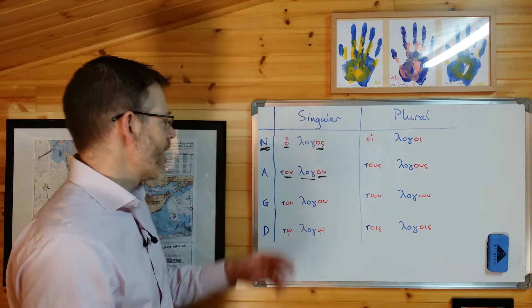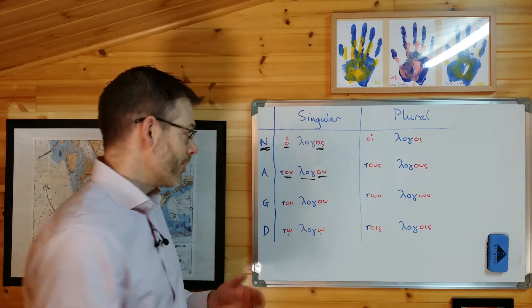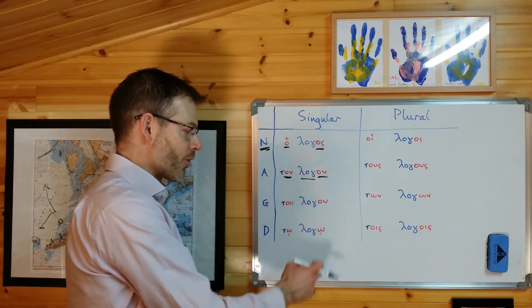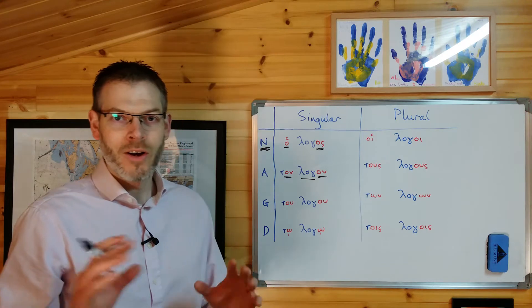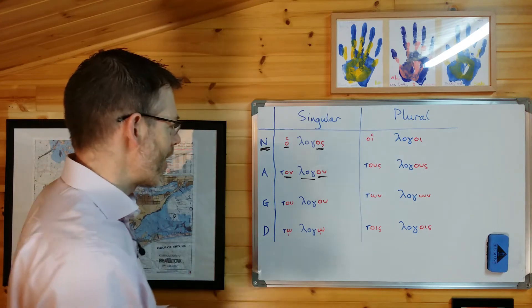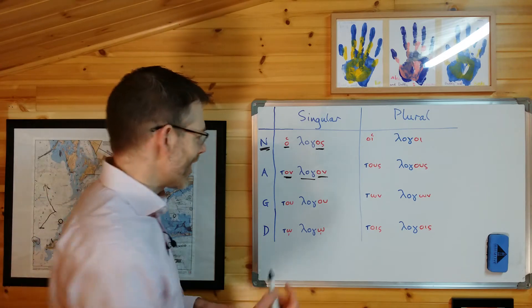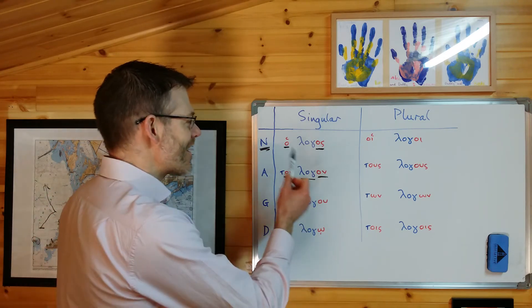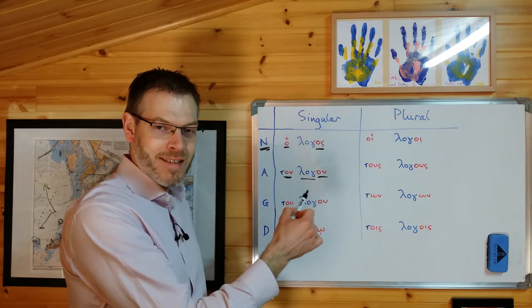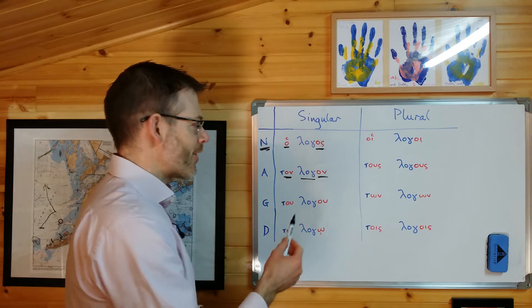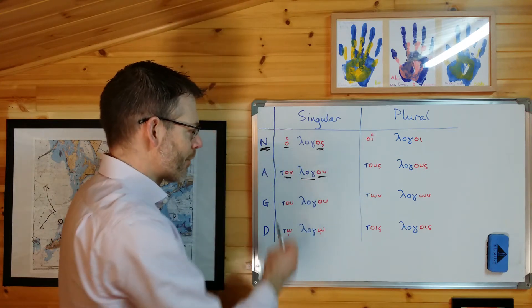And then the case endings on the masculine noun. Logos, logon, logoo, logoo, logoi, logoos, logon, logois. Now, what do you notice about these straight away? As soon as you look at them, I hope you notice that in almost every case, no pun intended, the ending on the noun is the same as the ending on the article. You spot that? The differences are in the nominative singular, where it's a little bit different.